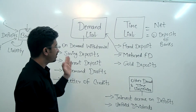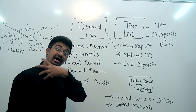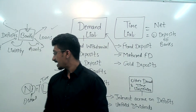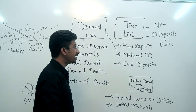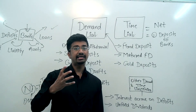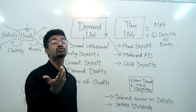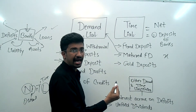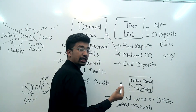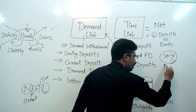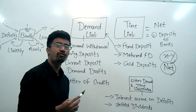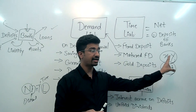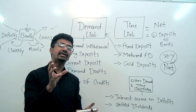इस तरीके से हमने देखा Net Demand Time Liability — पहले liability क्या होती है, फिर assets क्या होते हैं, फिर liability दो type की कौन सी होती है, और third type भी। अब बात करते हैं 'Net' की। अभी तक हमने सिर्फ liabilities की बात करी — bank को जो देना है। मगर bank को कुछ लेना भी होगा — उसको भी calculate करना पड़ेगा। अगर X amount देना है और Y amount किसी से लेना है — जैसे other banks में deposit — तो उसे minus करना पड़ेगा net निकालने के लिए।